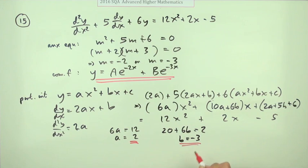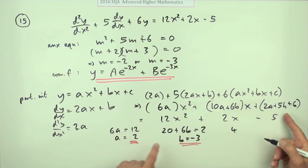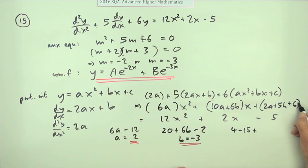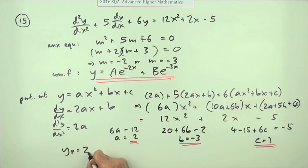Now that we know both of them, we can pop into that last one. 2a would be 4. 5b would be minus 15. Plus, that was meant to be 6c. Plus 6c should equal negative 5. Take that across, it's 10. Take the 4 across, it drops to 6. So c equals 1. So now we've got my particular integral, which will be 2x squared minus 3x plus 1.